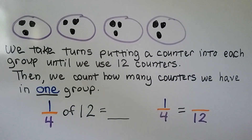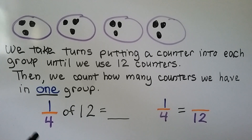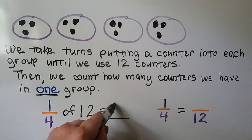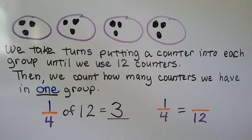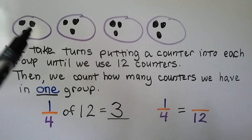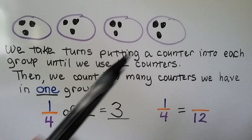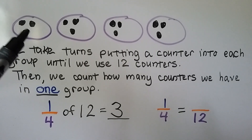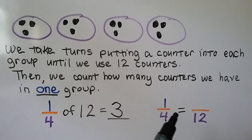They kind of look like little faces, don't they? We count how many counters we have in one group — we have three. That means one fourth of twelve is equal to three. We can also look at this fraction as three twelfths. We have three counters and twelve in all, so one fourth is equal to three twelfths.